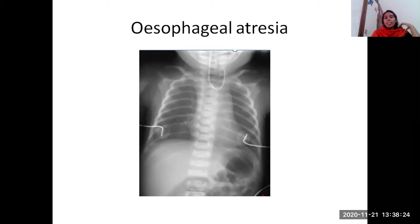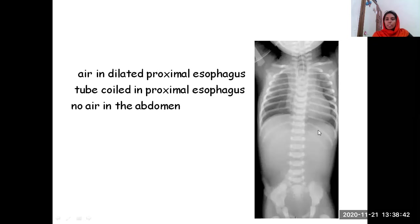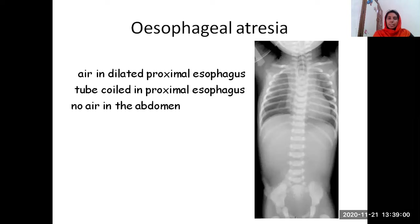What is this? This is a case of esophageal atresia. You can see that the tube is getting coiled here. If you put an NG tube — a nasogastric tube — the tube is getting coiled and the proximal esophagus is there. There is no air in the abdomen and the tube is getting coiled. Whenever you take an x-ray, it's better you always put an NG tube so you can see where it goes in the chest and rule out these things.